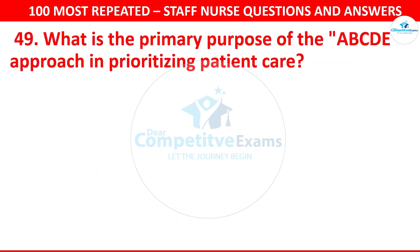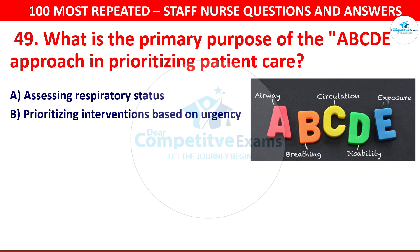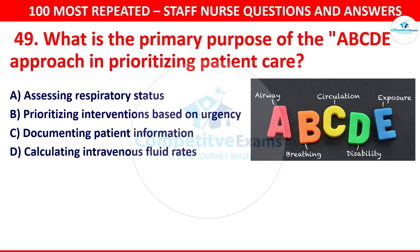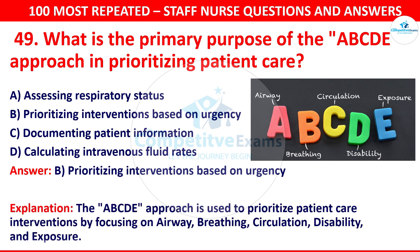Question number 49: What is the primary purpose of the ABCDE approach in prioritizing patient care? Options are assessing respiratory status, prioritizing interventions based on urgency, documenting patient information, or calculating intravenous fluid rates. The correct answer is prioritizing interventions based on urgency. The ABCDE approach is used to prioritize patient care interventions by focusing on airway, breathing, circulation, disability, and exposure.